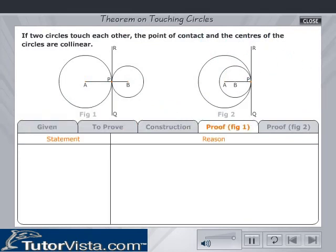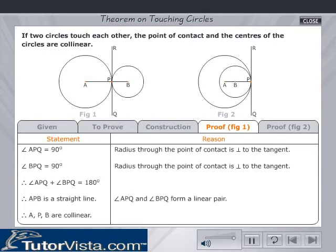The proof has been tabulated under two columns: statement and reason. Let us understand each step and arrive at the conclusion. In figure 1,